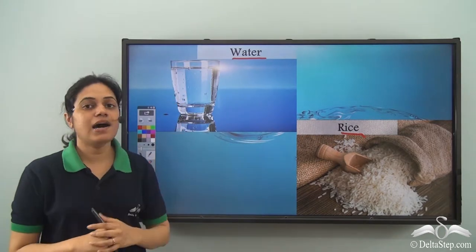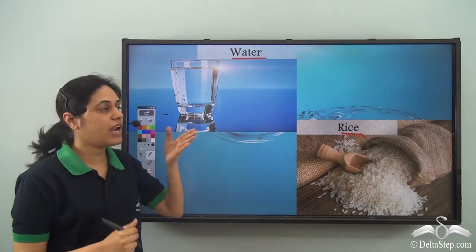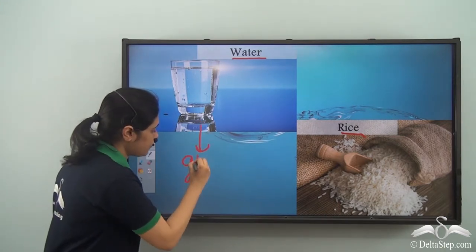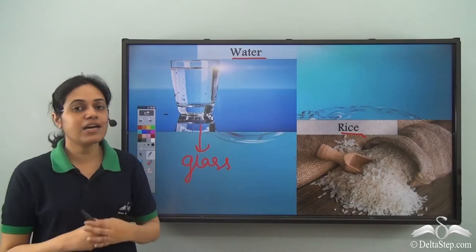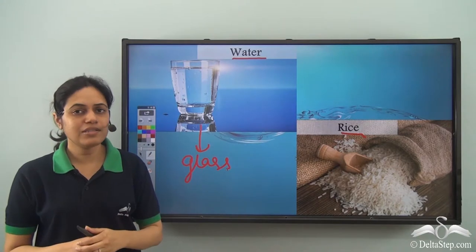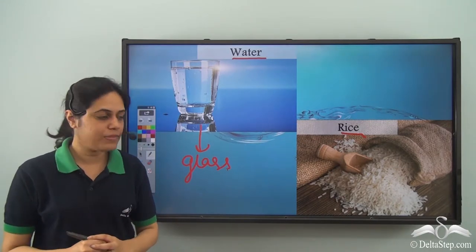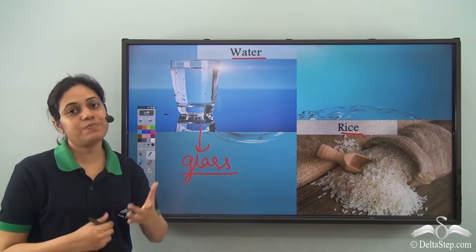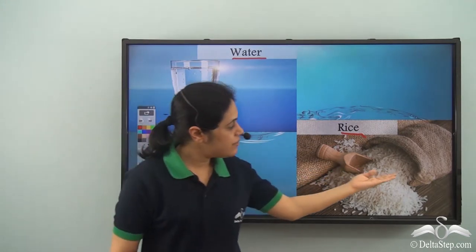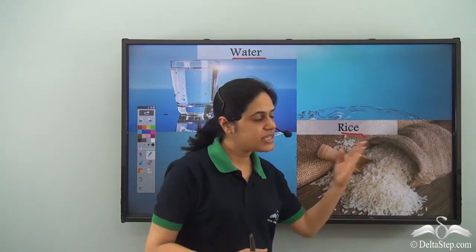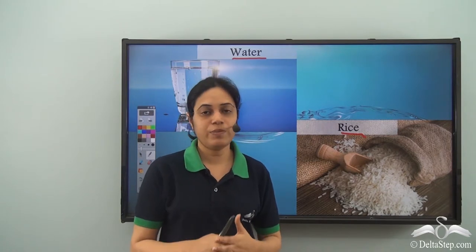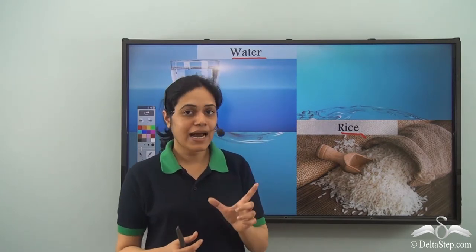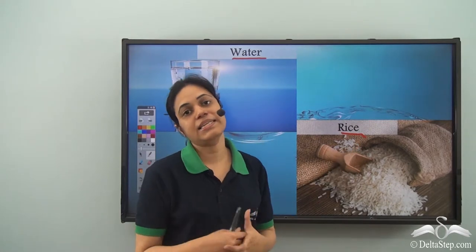But what about a glass of water? If I say that I have a glass of water, is glass a countable noun? Yes — if I ask you how many glasses of water are here, you can answer there is one glass of water. So, glass is a countable noun, whereas the water inside the glass is an uncountable noun. Similarly, sack — the rice here is kept in a sack. Sack is a countable noun because we can say there are two sacks of rice or five sacks of rice. So, sack is a countable noun whereas rice is an uncountable noun.